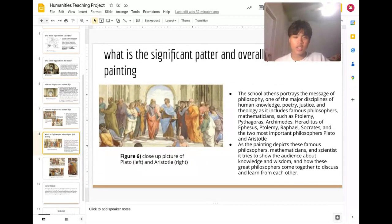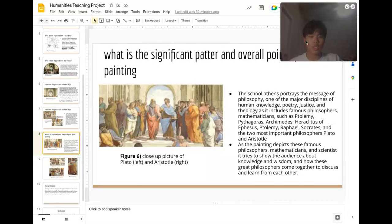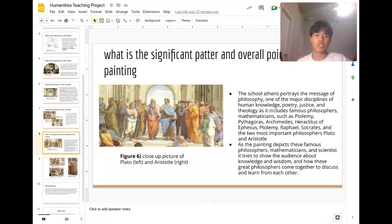What is the significant pattern and overall meaning of this painting? The School of Athens portrays a message of philosophy, one of the major disciplines of human knowledge, along with poetry, justice, and theology. It includes famous philosophers and mathematicians such as Ptolemy, Heraclitus of Ephesus, Archimedes, Raphael, Socrates, and the two most important philosophers, Plato and Aristotle, which can be seen in Figure 6.